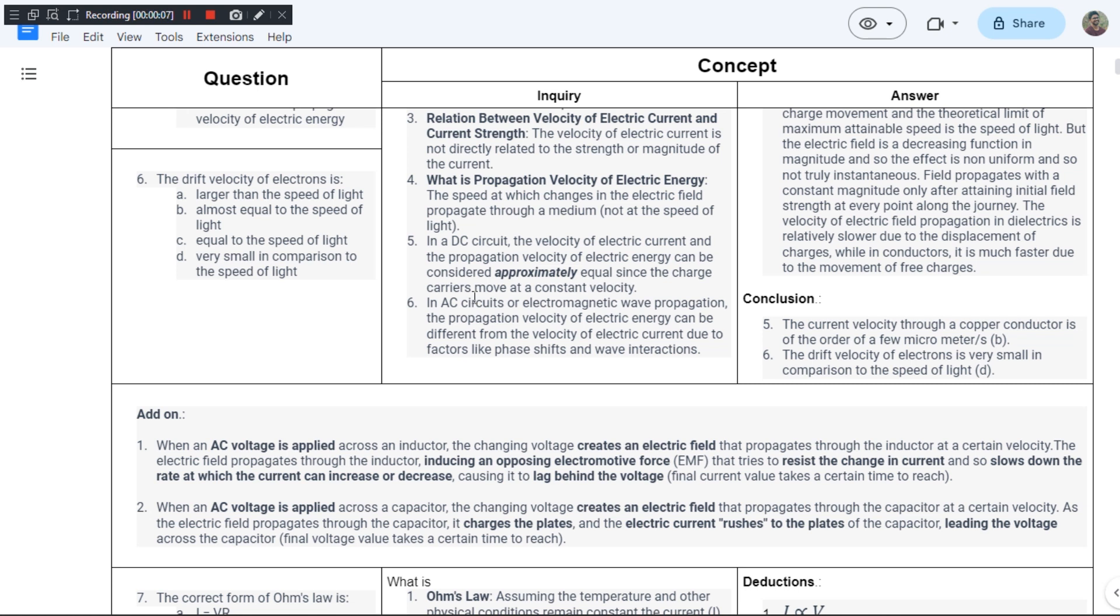In the fifth question when we were talking about the velocity of current in a conductor, I was talking about the series of bombardments. So here the drift velocity is closely related to that bombardments. Drift velocity of an electron is the velocity with which an electron travels under the influence of electric field.